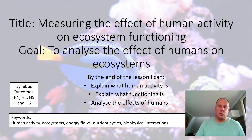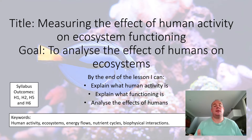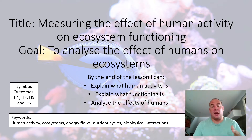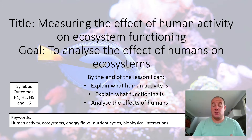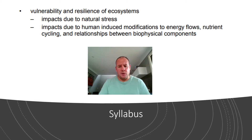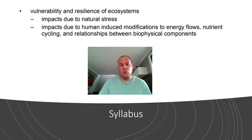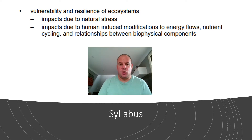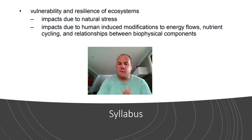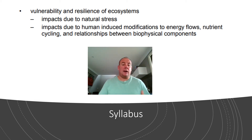Hi there Year 12. This video is looking at how we measure the effects of human activity on the functioning of an ecosystem. So far we've looked at what humans have done — now we're going to look at the effects and start looking at some of the issues that creates. Going back to the syllabus, we're going to cover these two dot points: the impacts due to natural stress and then human impacts due to human modification to energy flow, nutrient cycling, and the biophysical components.